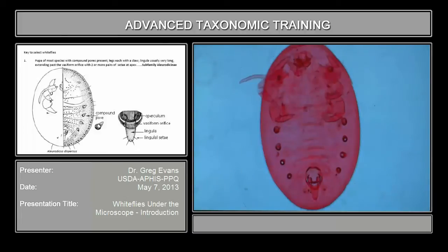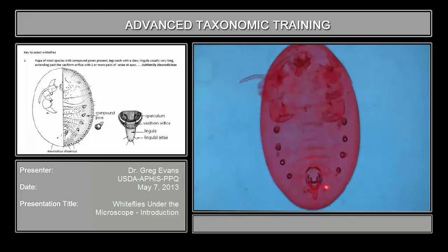The way you tell that this is a white fly is the vasiform orifice down here. It's the only type of insect that has this. It's basically an orifice hole, and inside it has an operculum plate and lingula — this tongue-like structure.